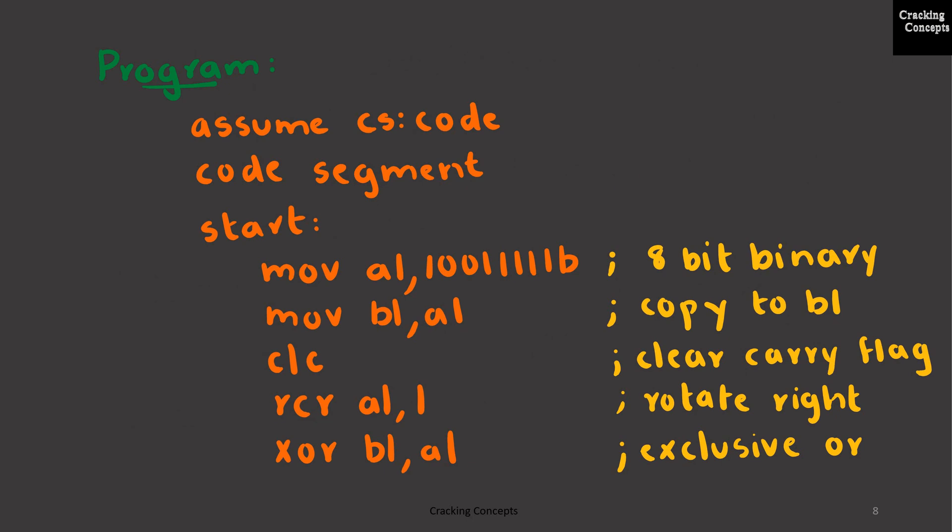Now we will move on to the program. We will begin with the assembler directive ASSUME, which will instruct the assembler that the code segment will have the name CODE. Since there is no data segment, we will directly start with the code segment, followed by a START label to show the start of the program.